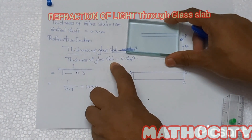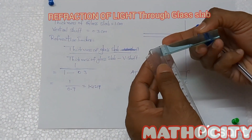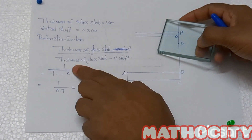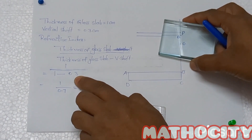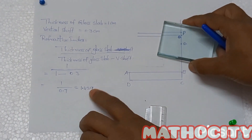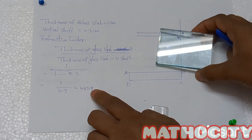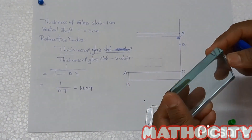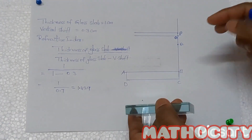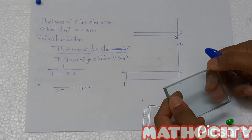The formula for refractive index is: thickness of glass slab divided by (thickness minus vertical shift). The thickness is one centimeter and the vertical shift is 0.3, so the calculation is 1 divided by 0.7, which equals 1.429. The refractive index of this glass slab is 1.429. With this experiment we learned how to find the refractive index of a rectangular glass slab and how to calculate the vertical shift. Thank you — if you like the video, please subscribe and share.